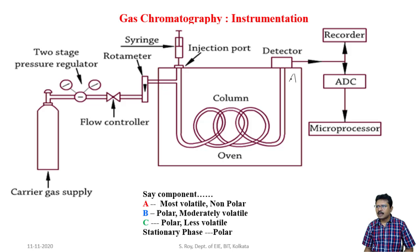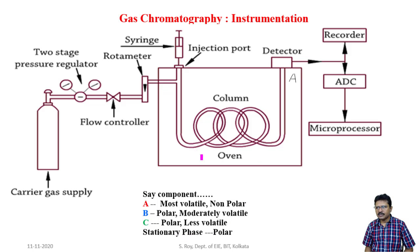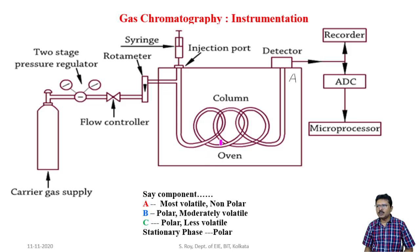Say A has reached the outlet. The remaining components B and C are both polar, so these two will interact with the polar stationary phase. However, B is moderately volatile and C is less volatile. According to volatility, B is more volatile than C, so the speed of B will be higher than the speed of C while they move through the column.